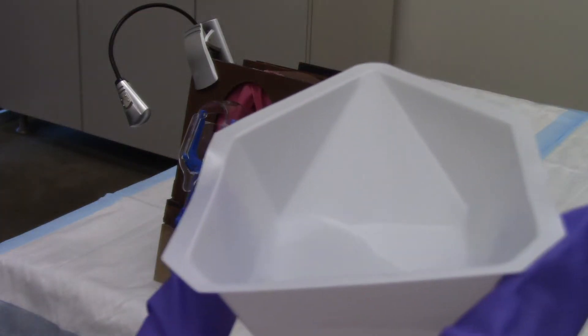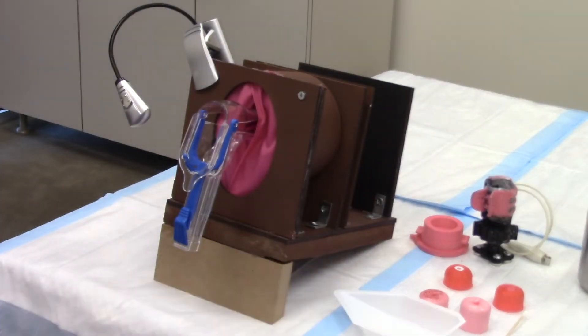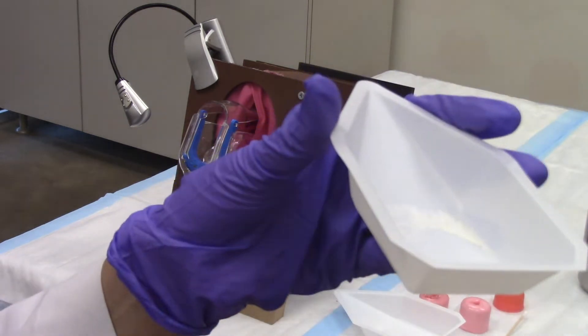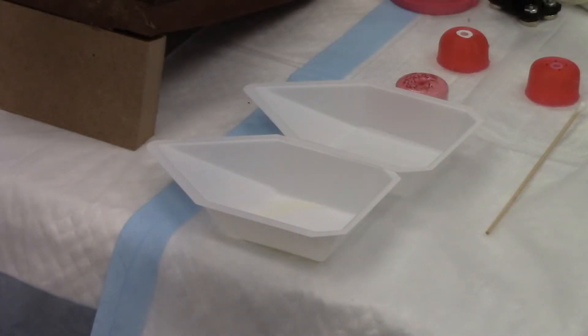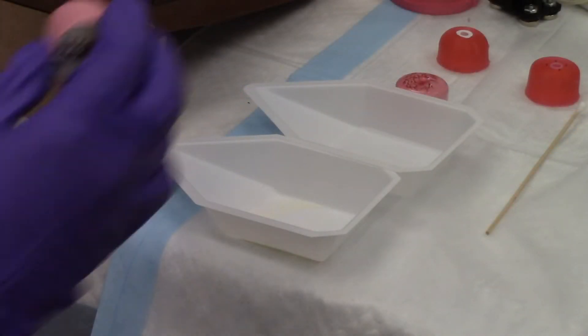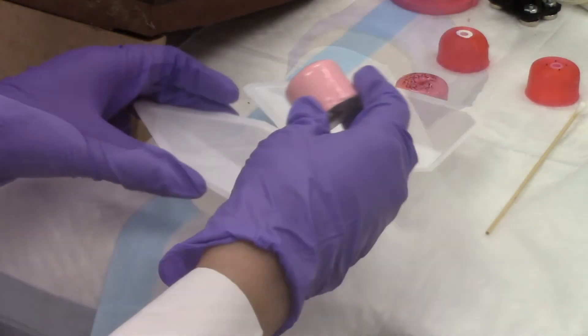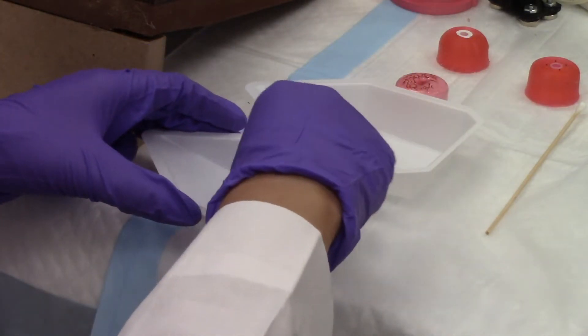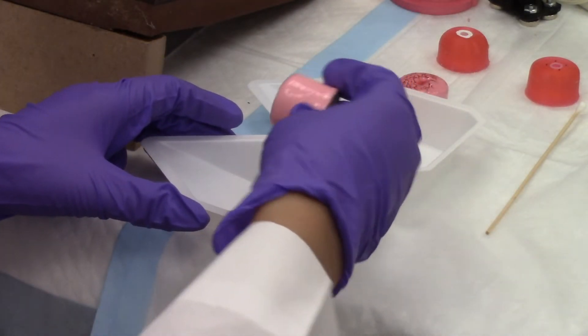To practice taking cervical swabs or endocervical samples, you can use water and corn flour. Take one of the 3D printed cervical models with an open endocervical canal and dip it in water, then dip the model in corn flour, making sure the flour covers the surface of the model and enters the endocervical canal.